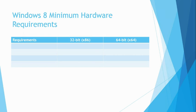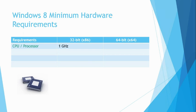The first minimum hardware requirement for Windows 8 is the processor requirement. If you are installing the 32-bit version of Windows 8, the processor speed must be at least 1 GHz. For the 64-bit architecture version of Windows 8, this is exactly the same: 1 GHz.